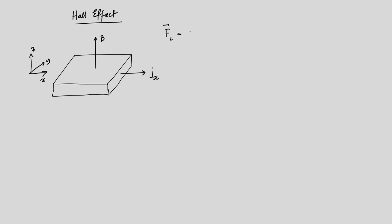The Lorentz force is written as F_L = Q(V × B). Now, if V — that is the electron velocity — is along the x-direction and the magnetic field is along the z-direction, this results in a force in the minus y-direction.